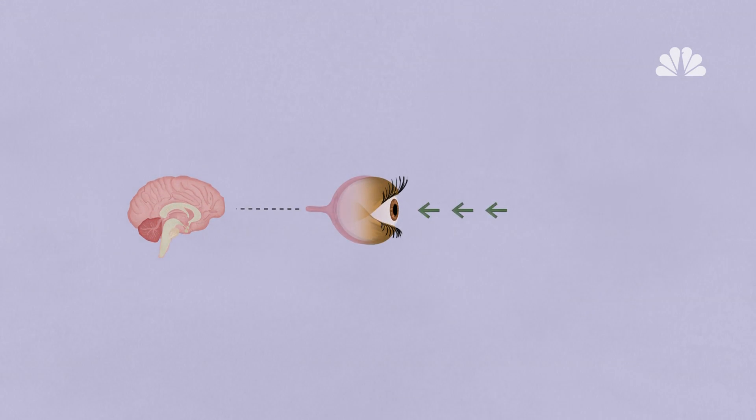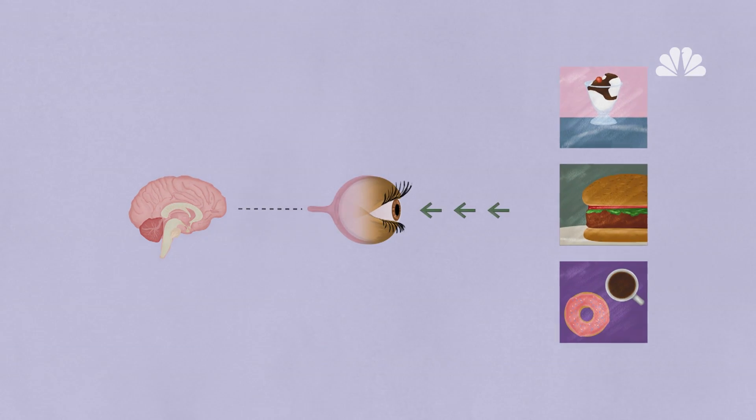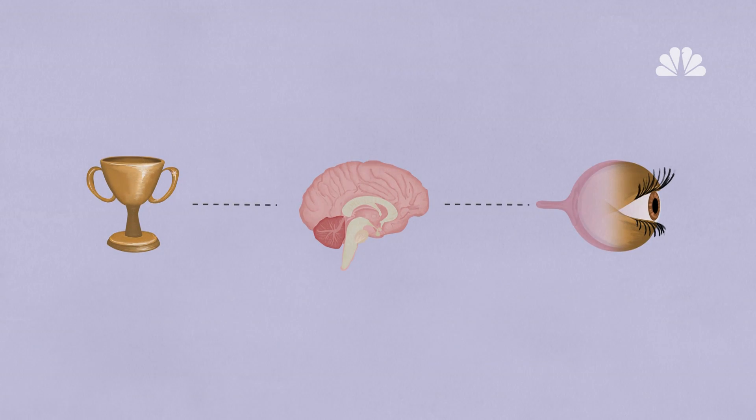Possibly because looking at pictures, like these tasty-looking meals on Instagram, can trigger the reward centers in our brains.